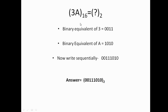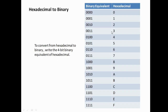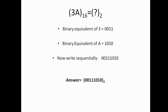For example, converting 3A base 16 to binary: the 4-bit binary equivalent of 3 is 0011, and the binary equivalent of A (which is 10) is 1010. Writing them sequentially gives 00111010 base 2. So 3A in hexadecimal equals 00111010 in binary. This is straightforward once you have the lookup table memorized.